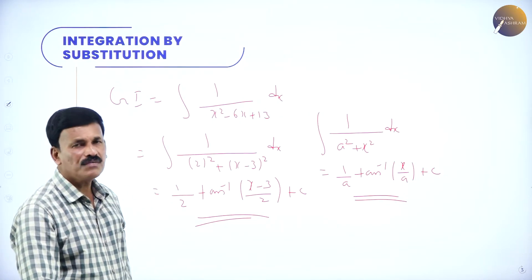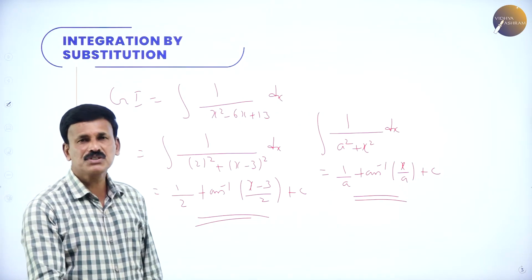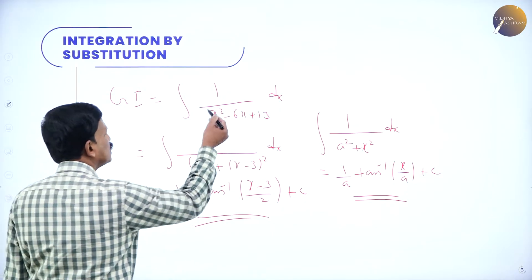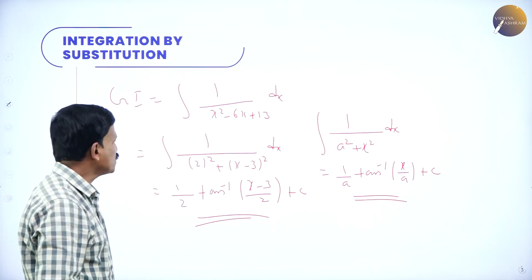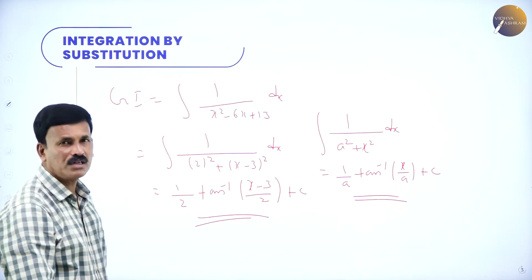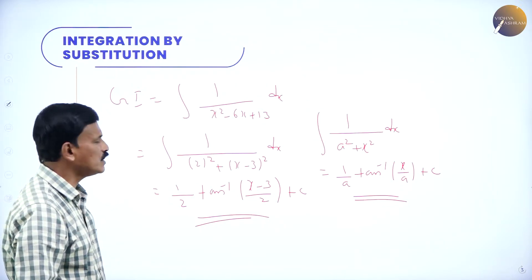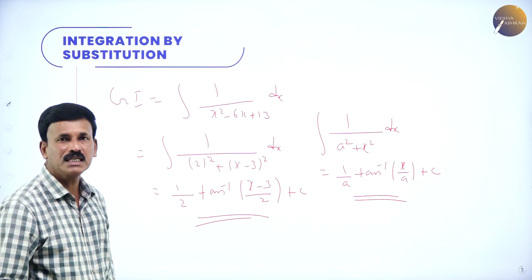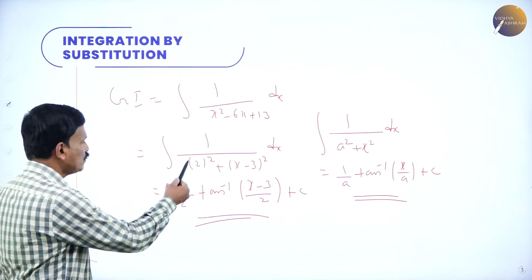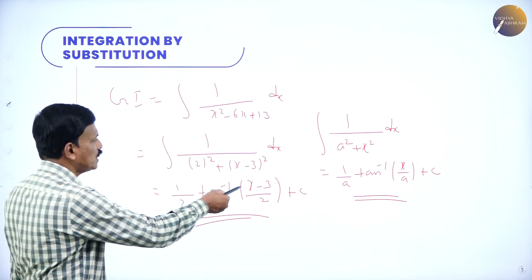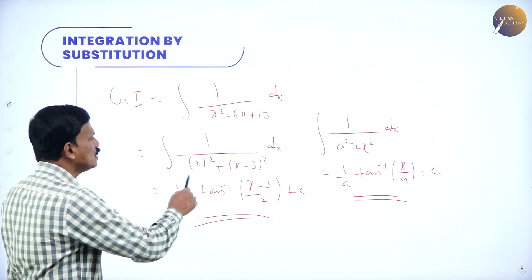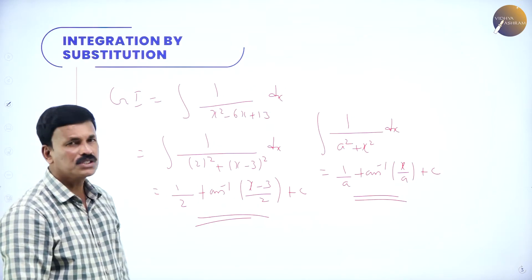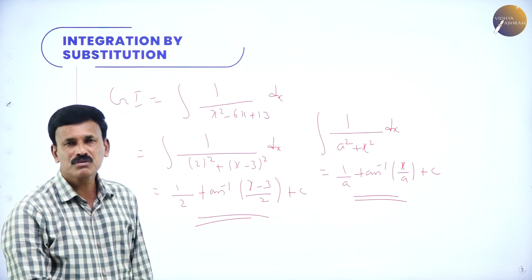Just first reduce to this form and use any formula related to some important integrals. The integral of 1/(x² − 6x + 13) reduces to 1/((x − 3)² + 2²), which is of the form 1/(a² + x²). Using the formula, 1/a tan⁻¹(x/a), we get (1/2) tan⁻¹((x − 3)/2) + c. This is how we solve this problem.